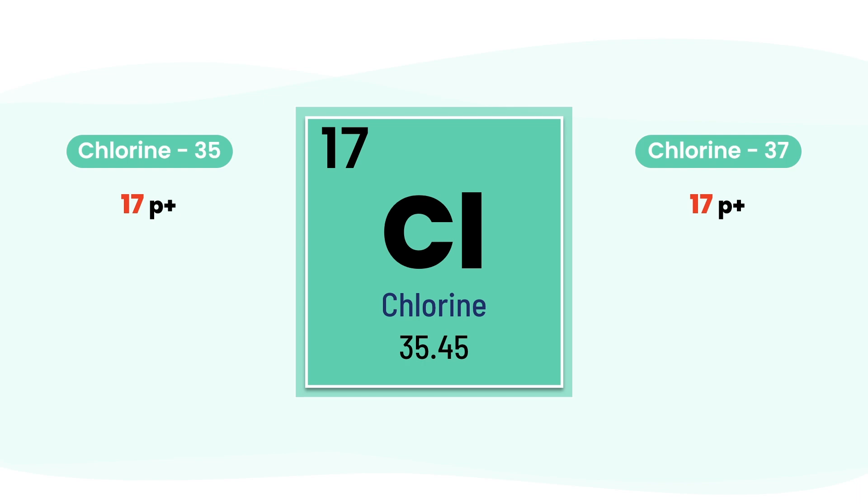But here's the difference: chlorine-35 has 18 neutrons, and chlorine-37 has 20. These are isotopes—atoms of the same element, with the same number of protons, but a different number of neutrons.